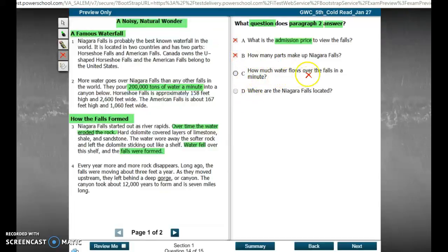C, how much water flows over the falls in a minute? Well, it says right here, they pour 200,000 tons of water a minute into the canyon below. So how much water flows? I'm not able to write this out very well, but it's 200,000 tons. A minute. That one is answered in paragraph two,